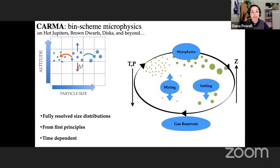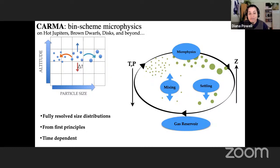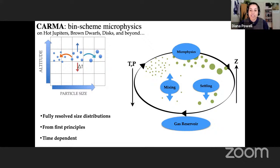I approach the study of clouds using these microphysical processes with the Community Aerosol and Radiation Model for Atmospheres, known as CARMA. CARMA is a well-tested code applied to nearly every planetary body in our solar system with an appreciable atmosphere. It works on an Eulerian grid of particle size and altitude where particles are allowed to grow into larger bins or evaporate into smaller bins, and can also move vertically. CARMA's key strength is that it calculates fully resolved cloud particle size distributions from first principles in a time-dependent framework.